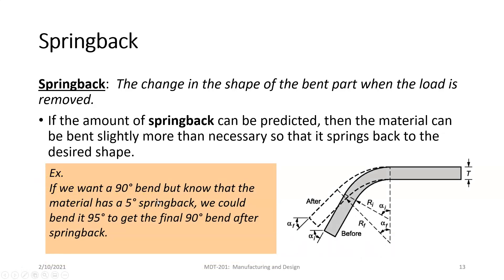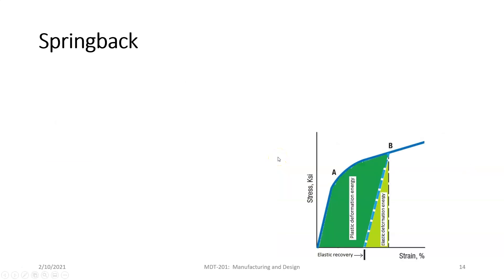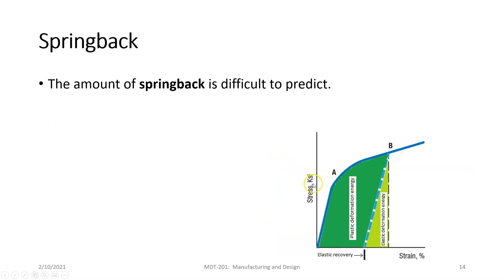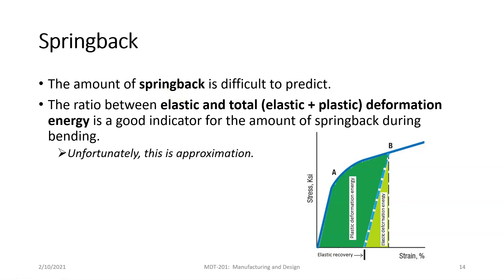For example, if we need a 90-degree bend but know that the material has a five percent spring back, we could bend it 95 degrees to get to the final 90 after the spring back. The amount of spring back is difficult to predict precisely because it's dependent on the environment, the metal, the exact dimensions, and how the bending occurs. But we can get reasonably good approximations, and you can do experimentation to establish your template.